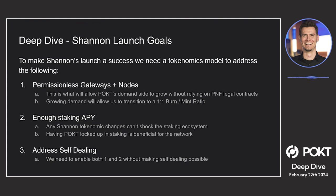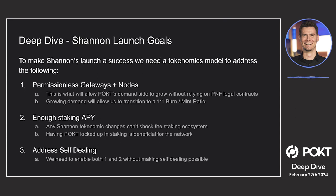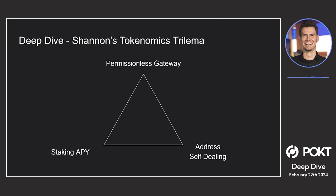Number two is enough staking APY — we don't want to crush our staking ecosystem, so we need enough staking APY to keep people incentivized to have their tokens locked and participate in the network. Number three: we have to address self-dealing. When goals one and two are both in play and you don't have enough relays, self-dealing becomes a problem. So in order to have numbers one and two in an economic model, you have to address number three.